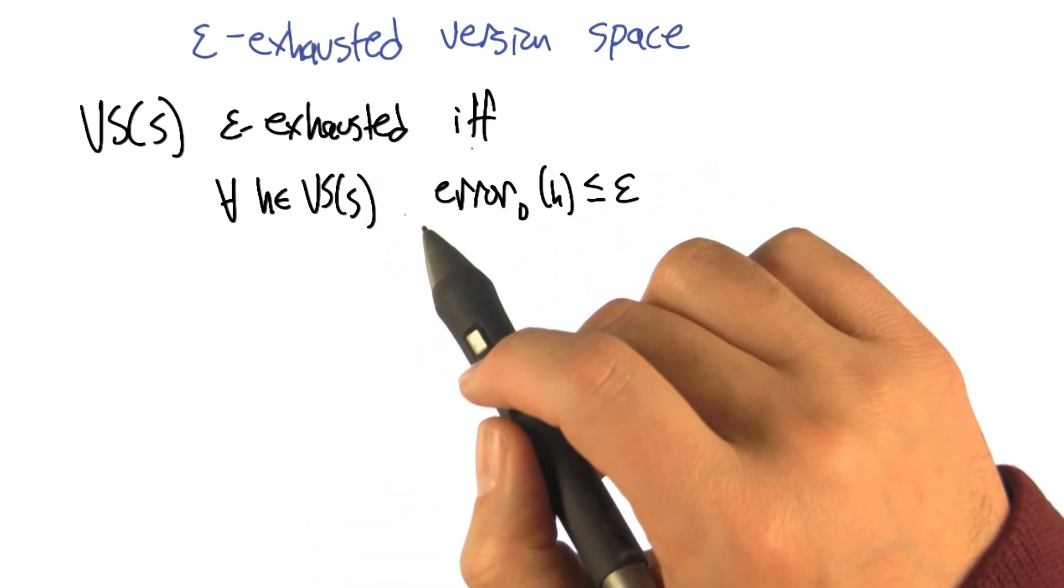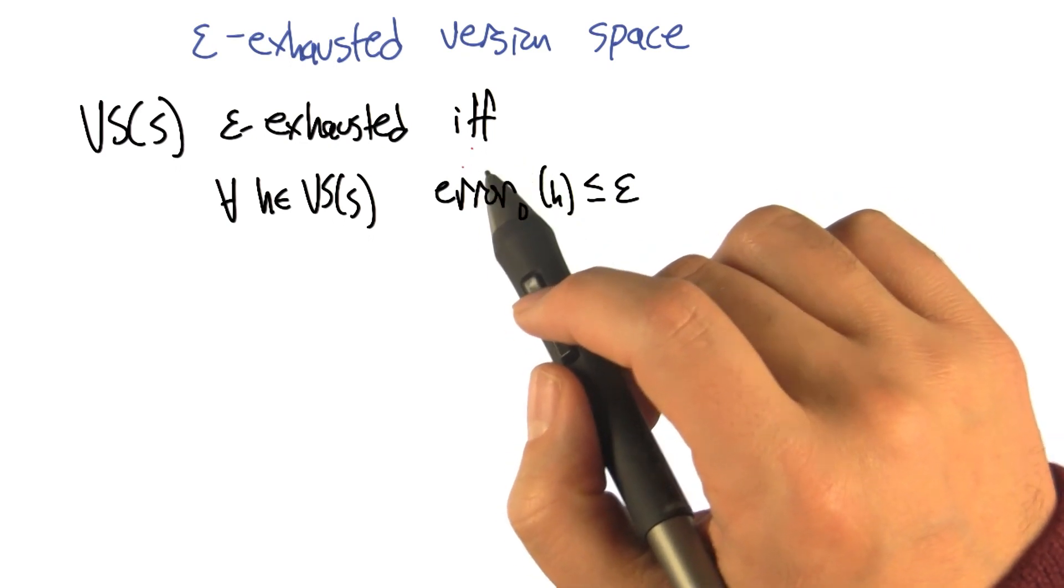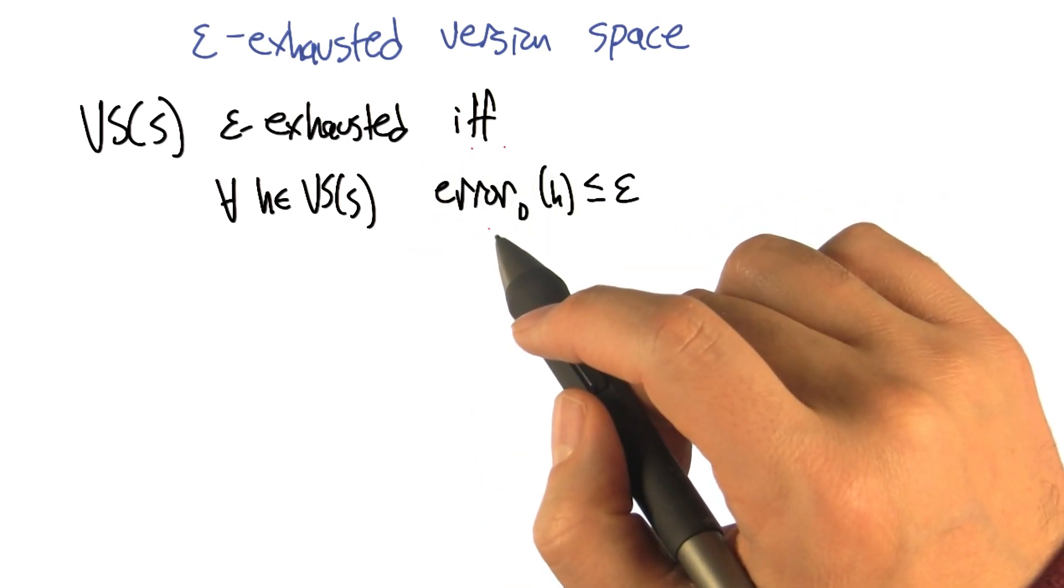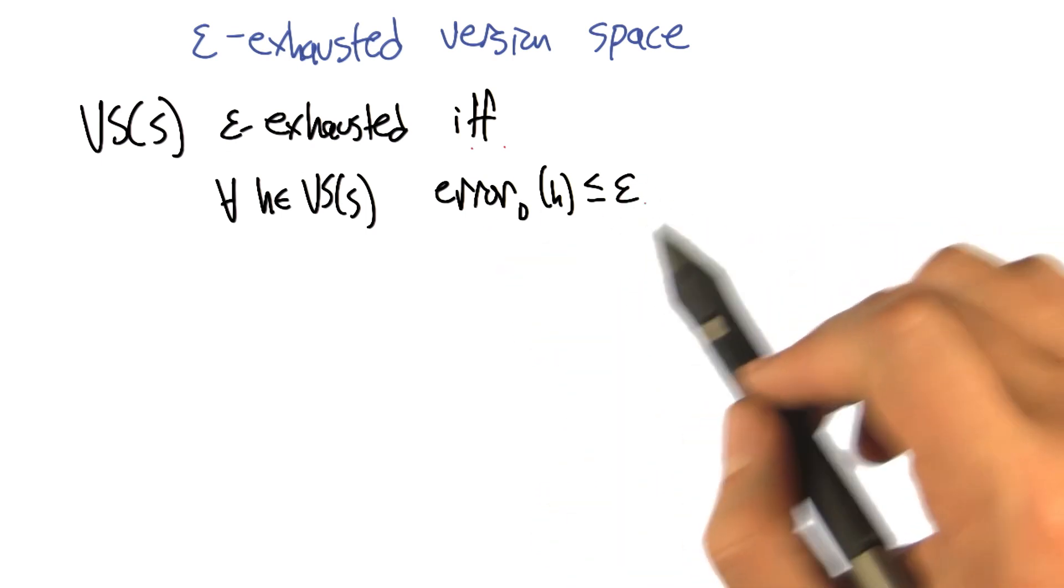So if we can do this, then your algorithm is going to work. Your algorithm says at that point, choose any of the hypotheses in your hypothesis set, and you're going to be fine. You're going to have low error.